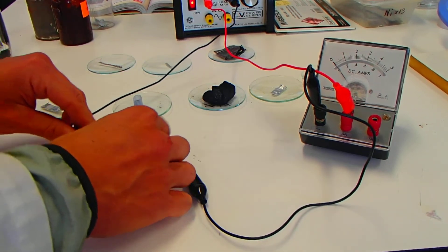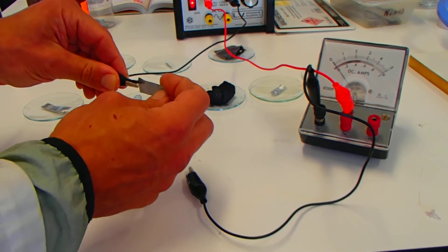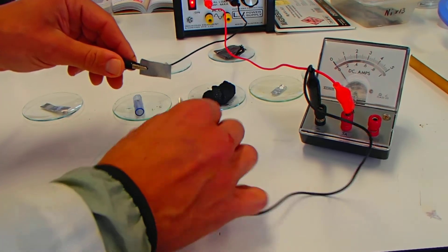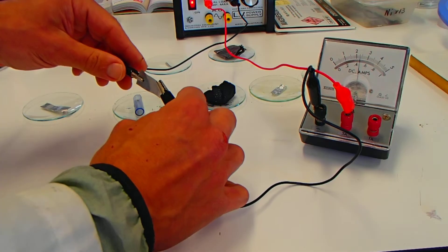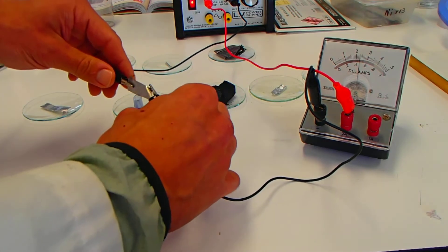Here we go for the sample of zinc. One there. And one there. Yes. Conducts electricity. We're getting some reading there on the ammeter.